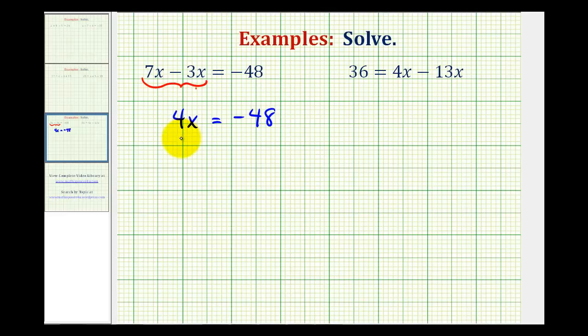And now we can work on isolating the variable, and since the 4 and the x are attached by multiplication, we'll have to divide both sides of the equation by positive 4 in order to isolate the variable.